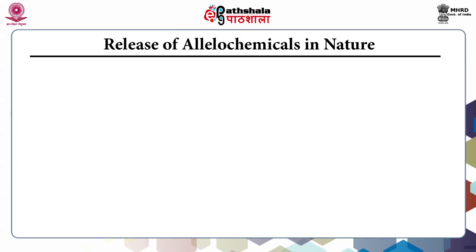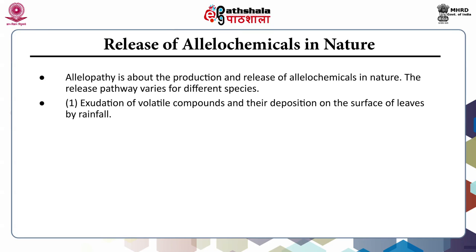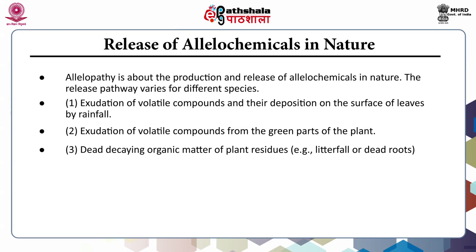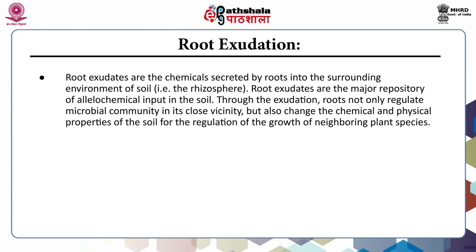Allelopathy is all about the production and release of allelochemicals in nature. The release pathway varies for different species. Pathways include: exudation of volatile compounds and their deposition on leaf surfaces by rainfall; exudation of volatile compounds from green parts of the plant; and dead decaying organic matter such as litter fall or dead roots. Root exudates are the chemicals secreted by roots into the surrounding soil environment — the rhizosphere — and are the major repository of allelochemical input in the soil. Through exudation, roots not only regulate microbial communities but also change the chemical and physical properties of the soil to regulate the growth of neighboring plant species.